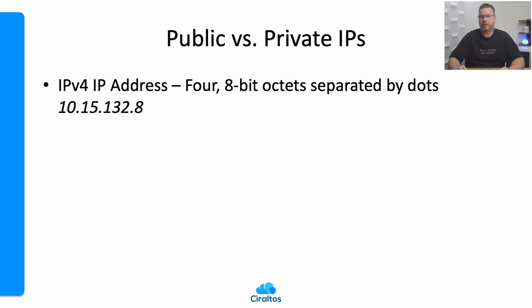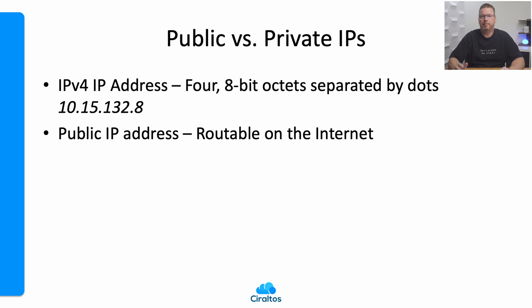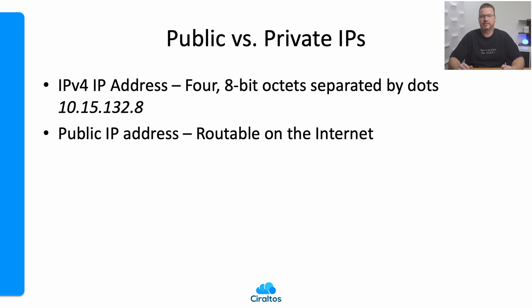We can have public or private IP addresses. A public IP is routable on the internet — each device on the internet has to have a public IP. Even the computer you're using is accessing the internet with a public IP address. You can find that by opening a browser and going to whatsmyip.com, or my favorite, ipchicken.com.